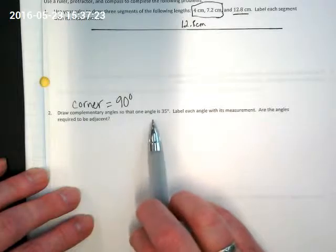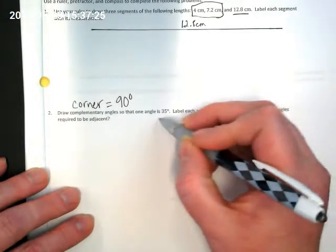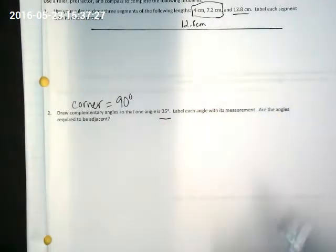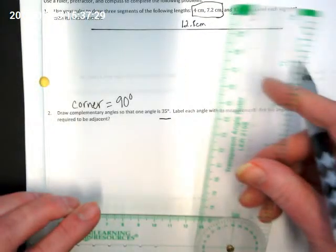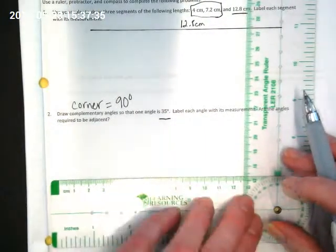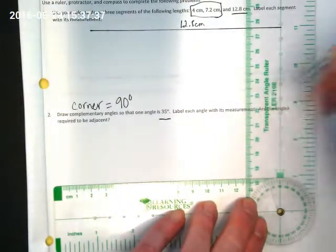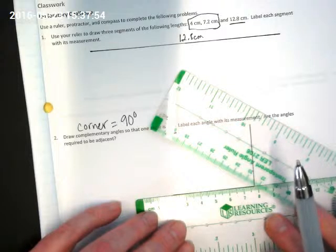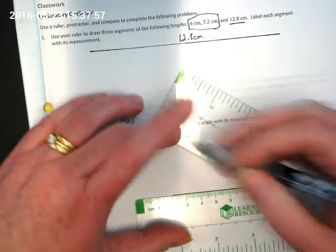We want one of the angles in the complementary angle to be 35 degrees. So I'm first going to set my angle ruler to 90 degrees. Again, making sure that little crown-looking piece is above the 90.